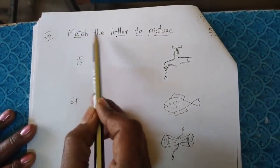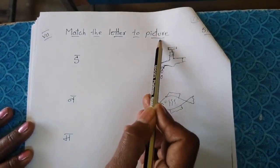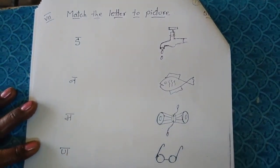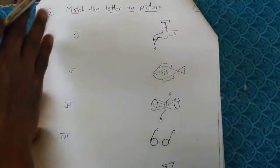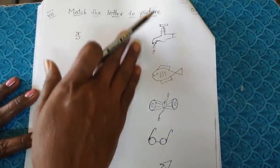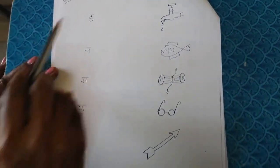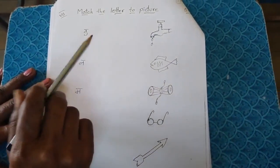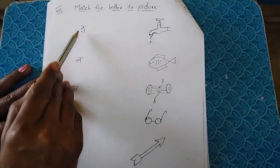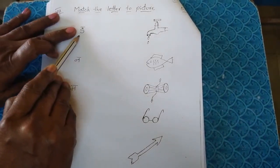Now next one, seventh bit is match the letter to picture. This is also matching. First this row is letters, this side pictures I have given. Then you have to identify them and match it. Da, da, da.